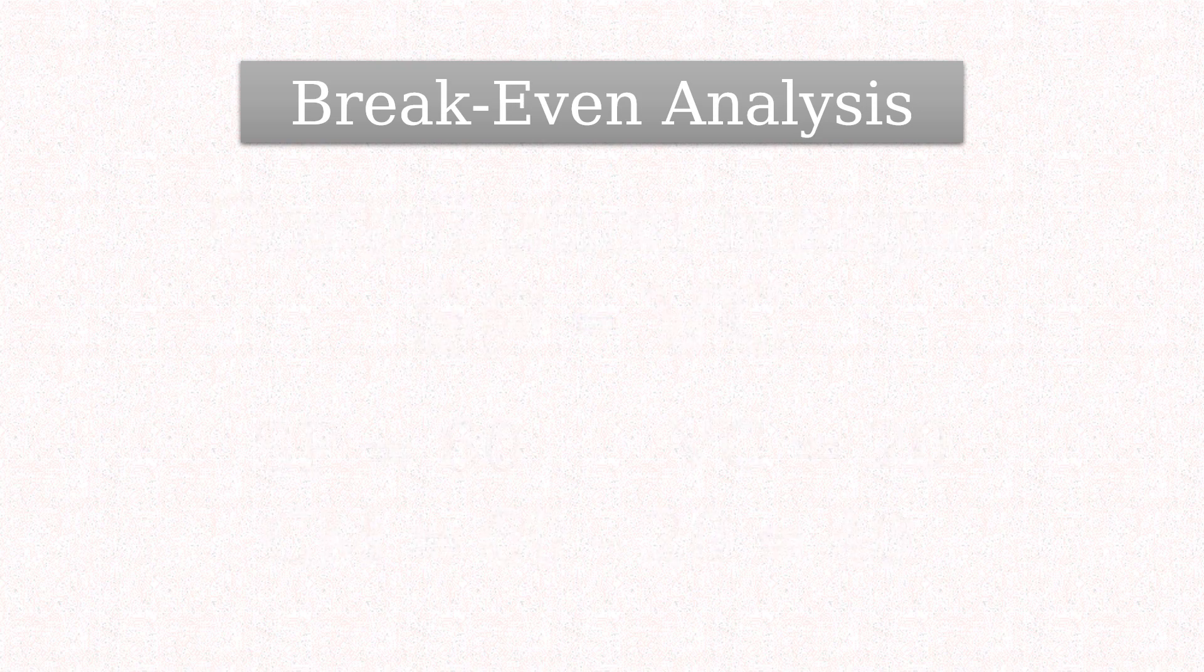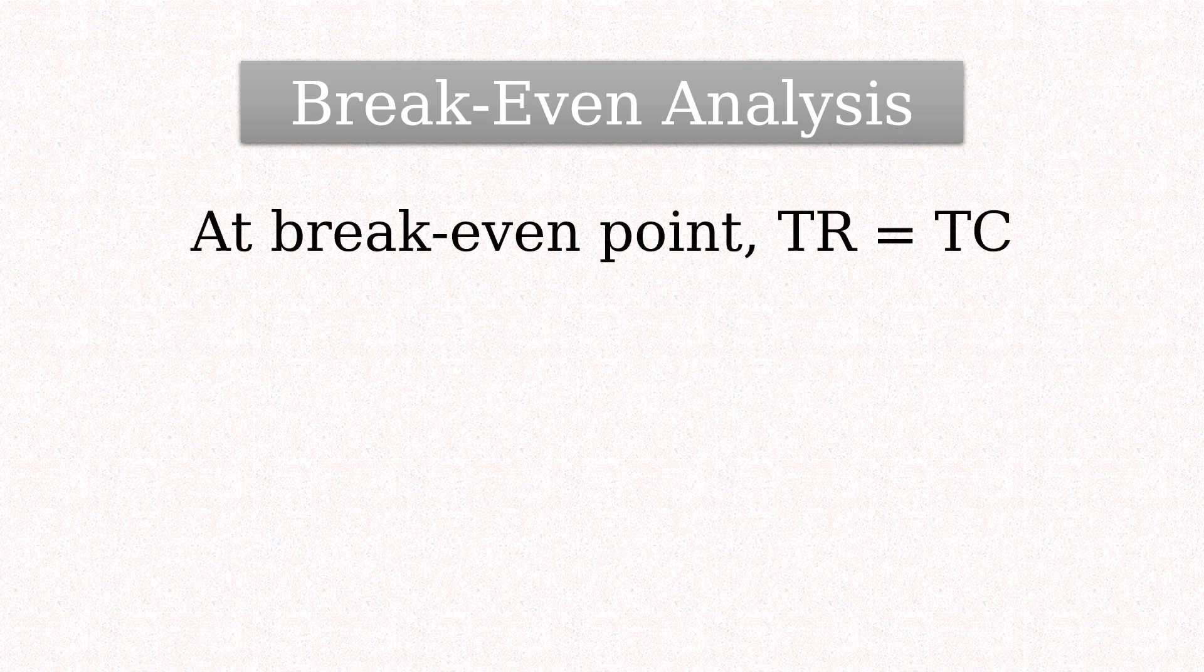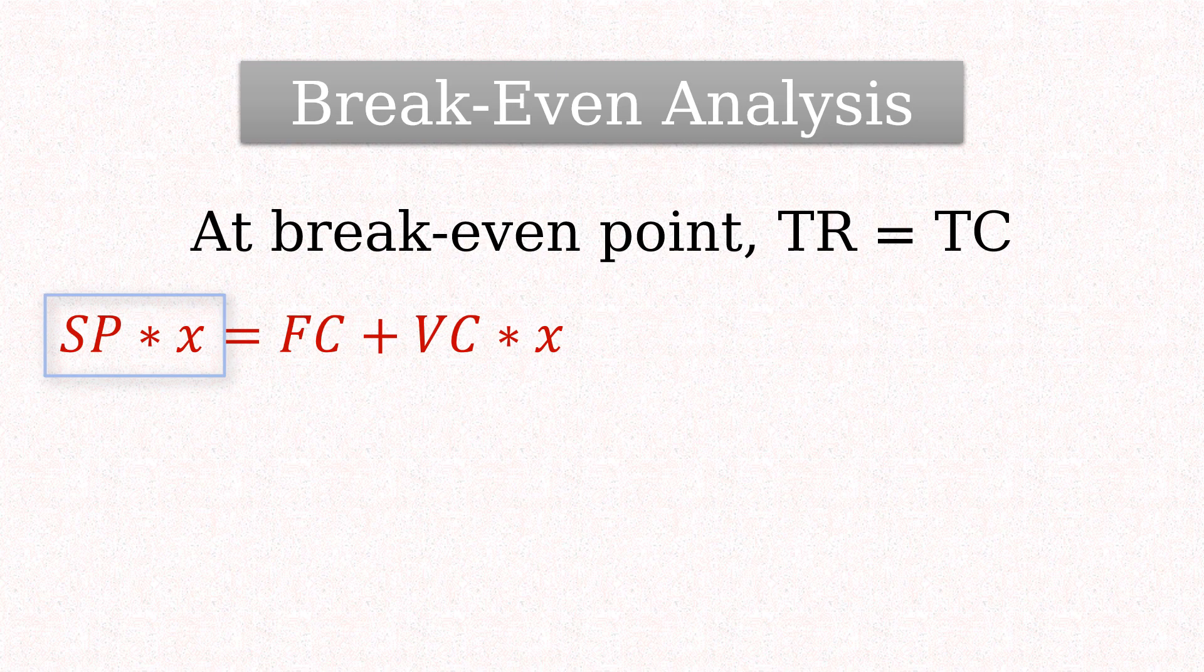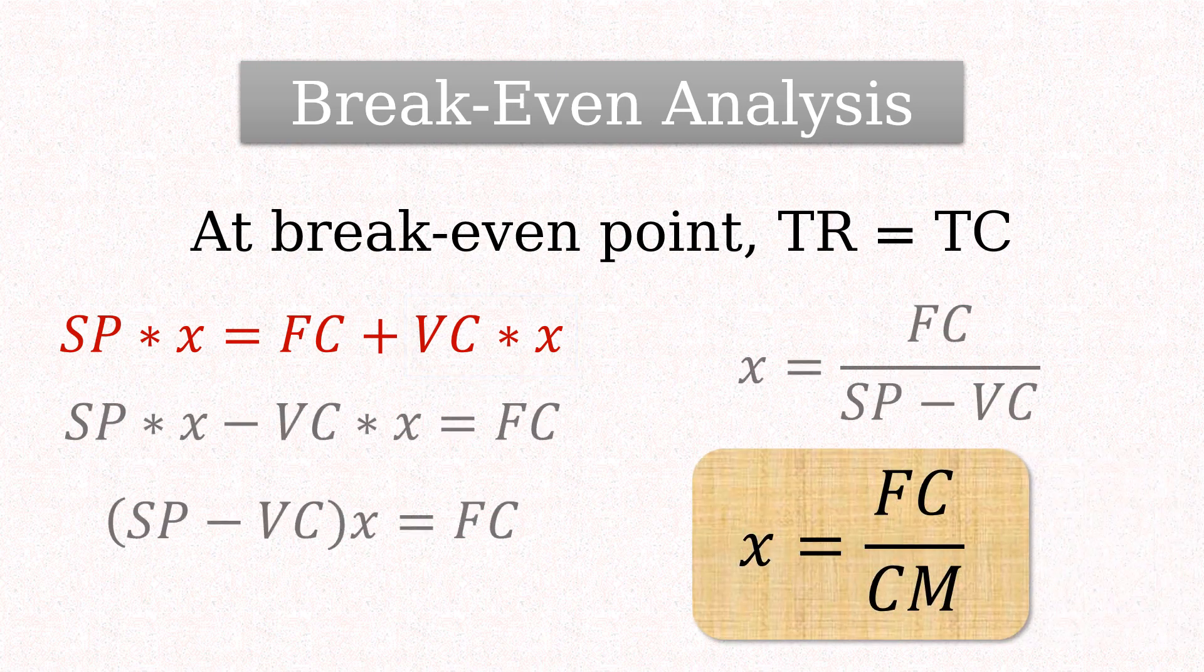Now, at breakeven point, total revenue equals total cost. That is, selling price per unit times the number of units equals fixed cost plus variable cost times the number of units. On solving for x, we have a formula for breakeven in units, which is simply fixed cost divided by the contribution margin per unit.